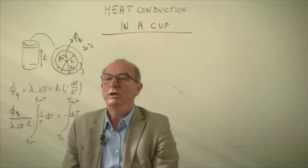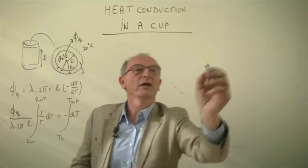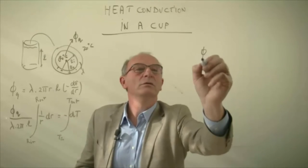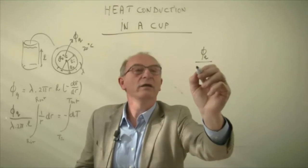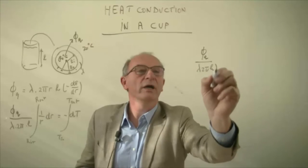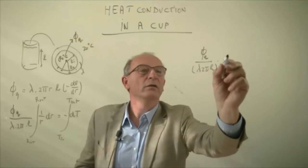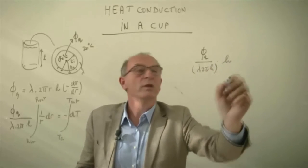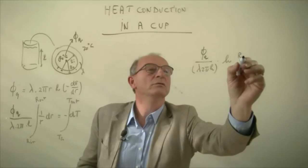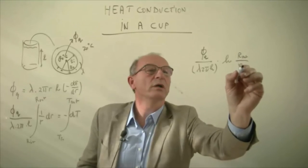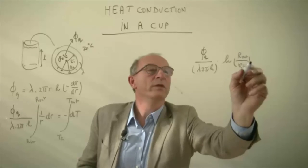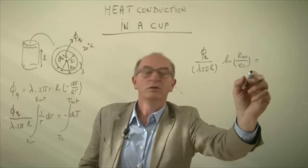If you integrate this then you get phi q divided by lambda 2π h multiplied by the logarithm of r out divided by r in is equal to,